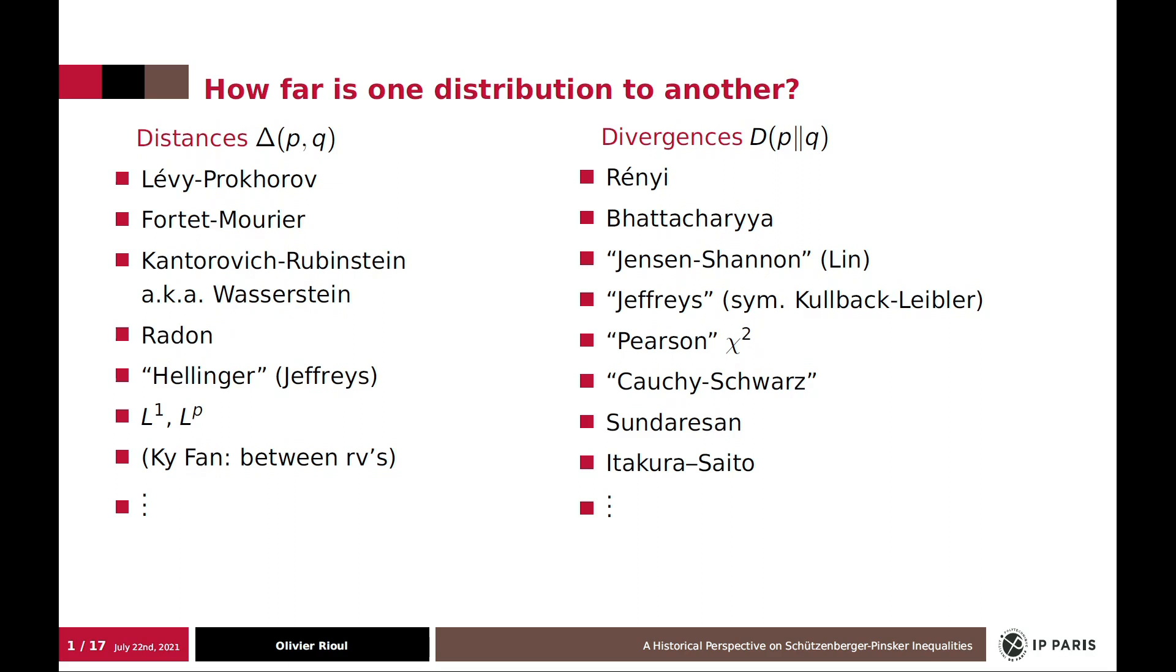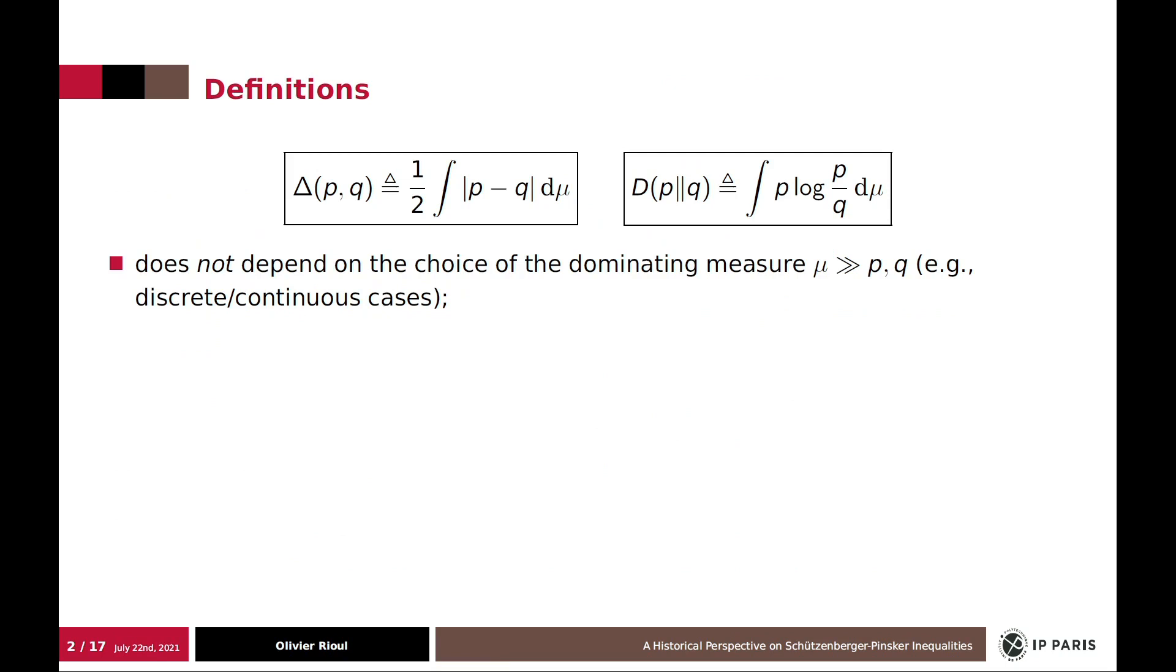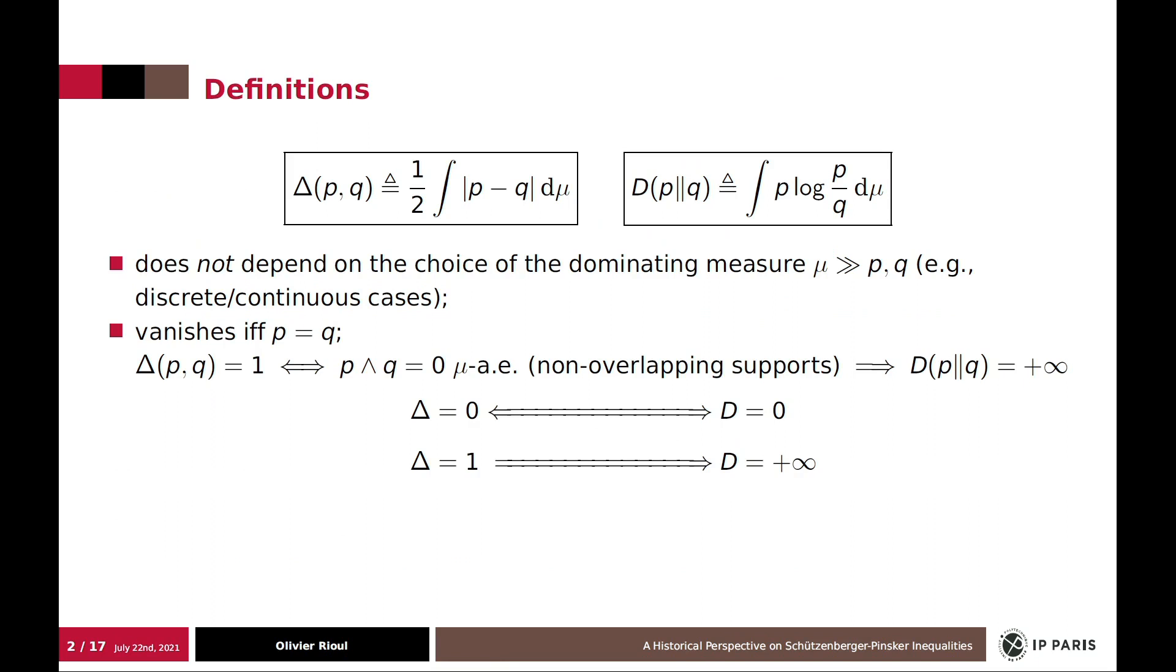For this talk I will only be focusing on the most basic quantities which are total variation or statistical distance, delta, and Kullback-Leibler divergence, D of PQ, also known as relative entropy. These definitions include the discrete and continuous case depending on the choice of the dominating measure.